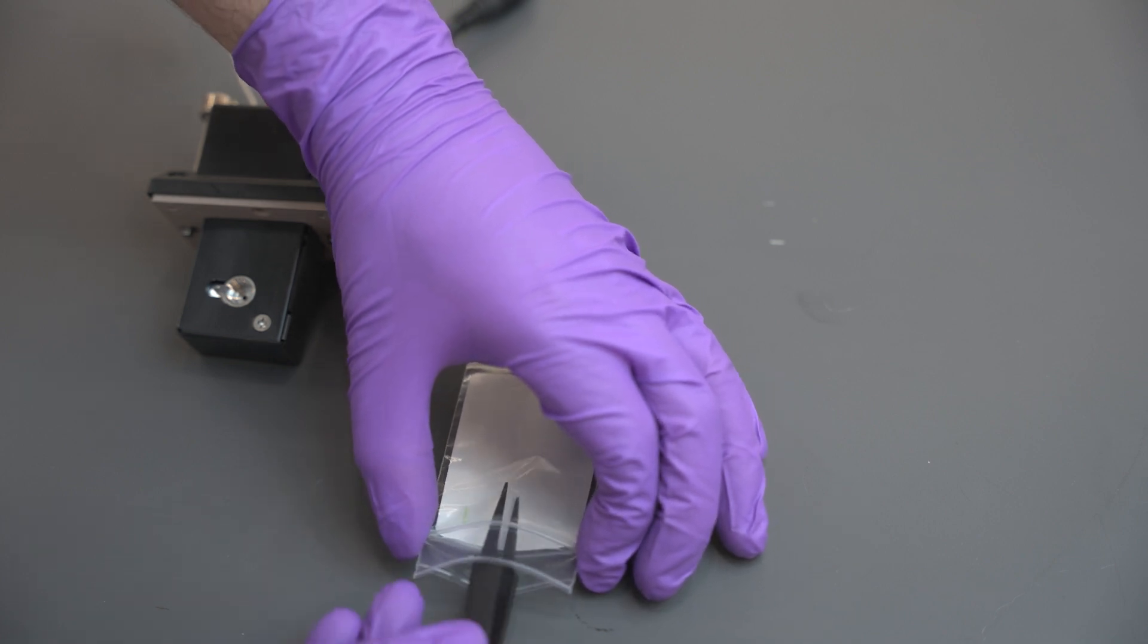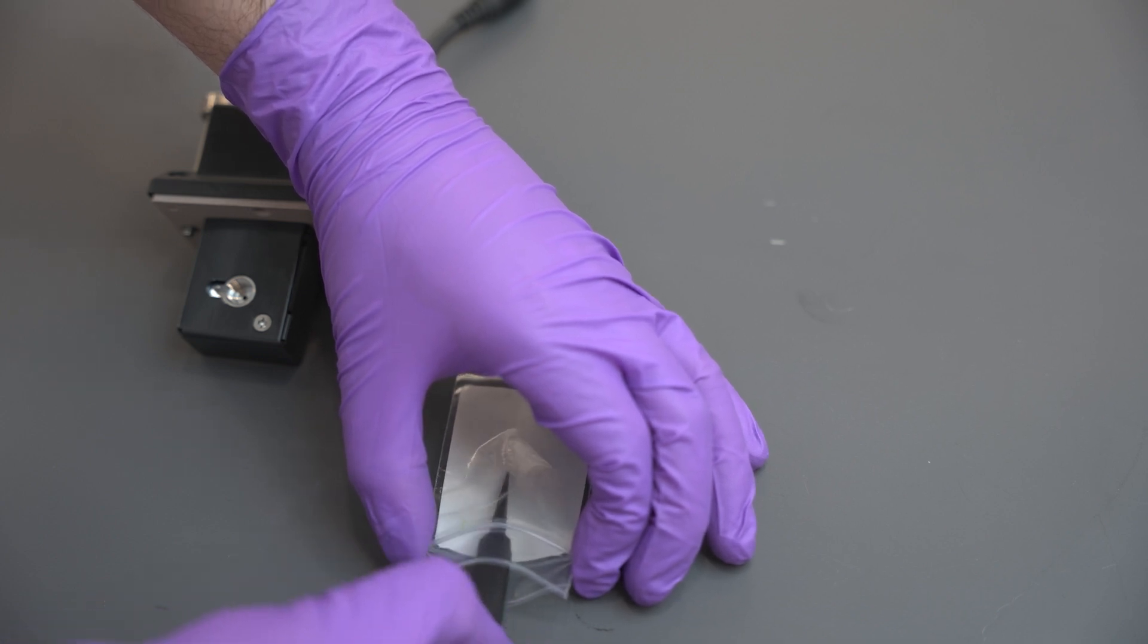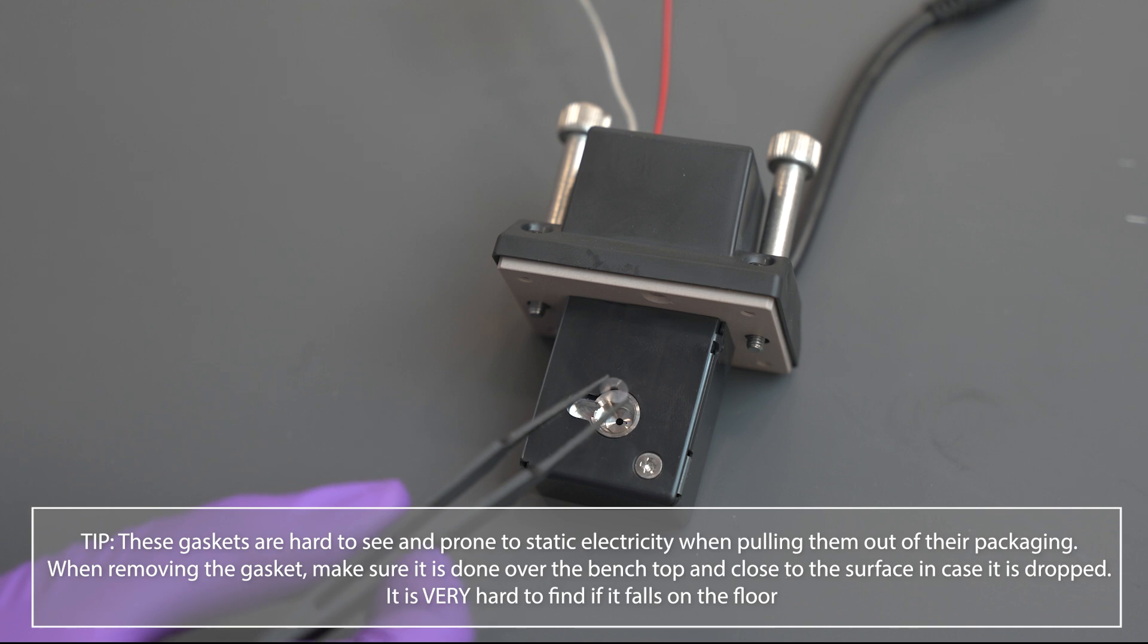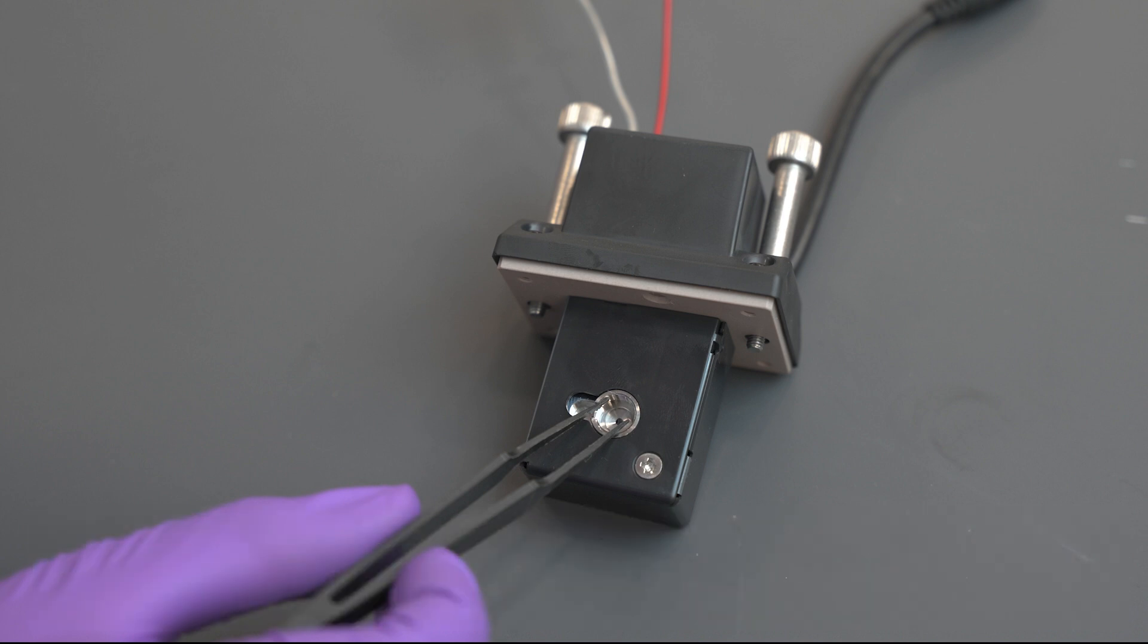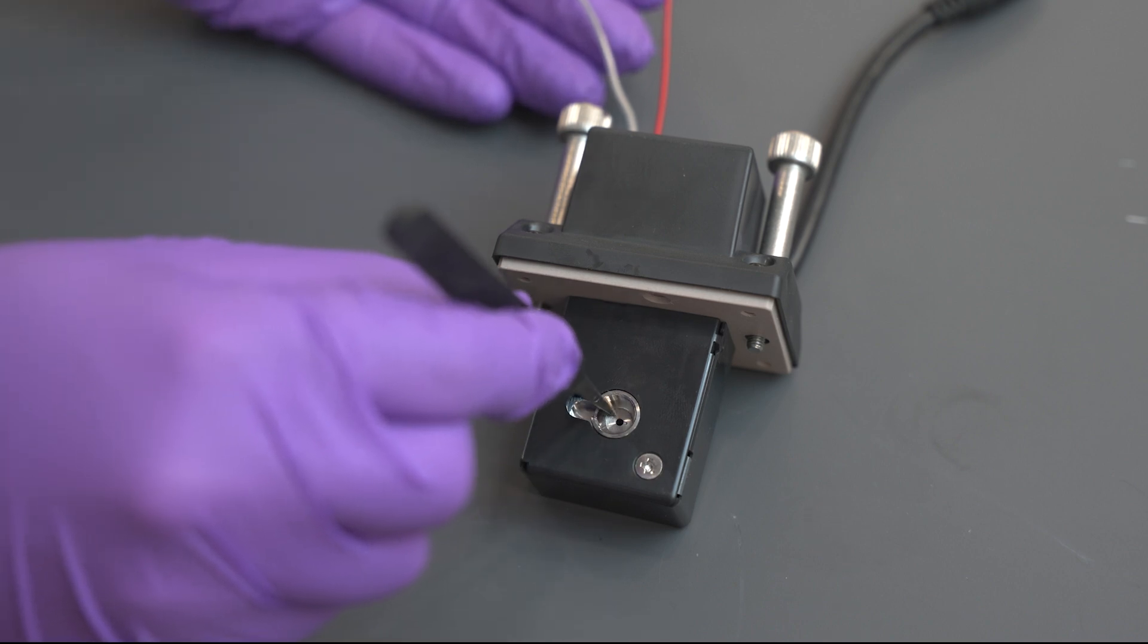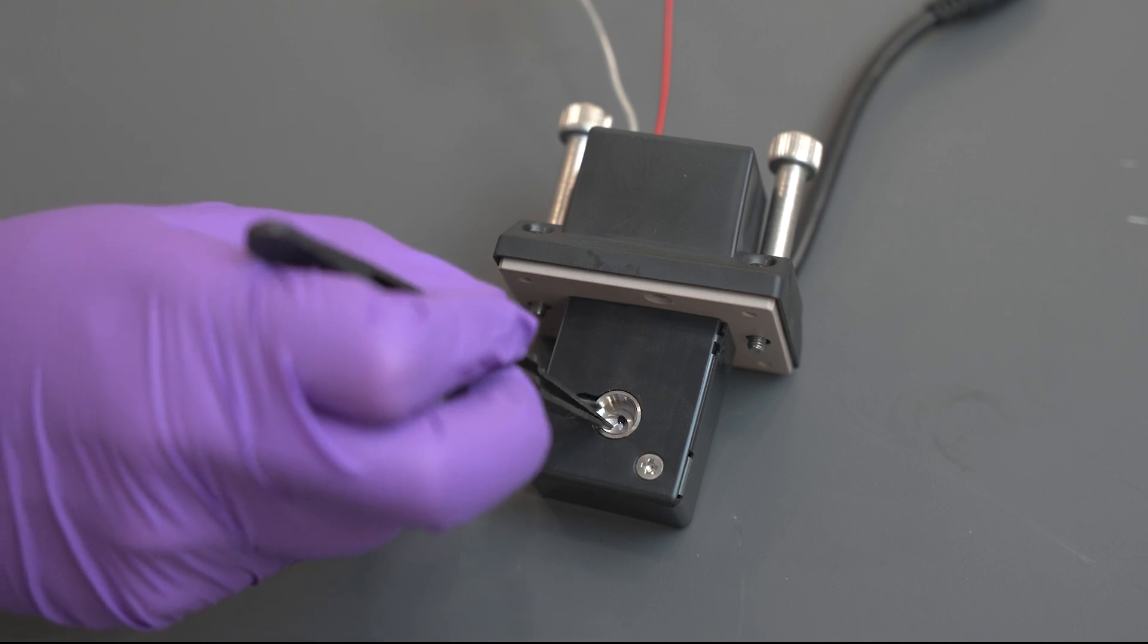Remove the lenses from their packaging with the plastic tweezers and set them on a clean piece of wiping paper. Carefully remove one gasket from the packaging with the plastic tweezers and place it directly into the flow cell housing. These gaskets are hard to see and prone to static electricity when pulling them out of their packaging. When removing the gasket, make sure it is done over the bench top and close to the surface in case it is dropped. It is very hard to find if it falls on the floor. Rotate the gasket to push out any air bubbles, preventing it from contacting the surface of the flow cell. Pick up one of the lenses with the plastic tweezers and place it above the gasket, flat side down. Make sure that it is seated properly.